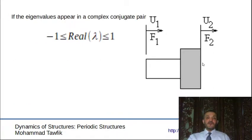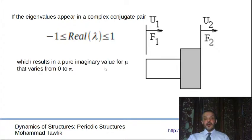What happens if the real part of lambda lies between minus 1 and 1? If the real part of lambda lies between 1 and minus 1, we will have values of mu changing from 0 to pi using an inverse cosine function. That's the interesting part. Actually, this is the part we are not interested in. And this is what's called a pass band.